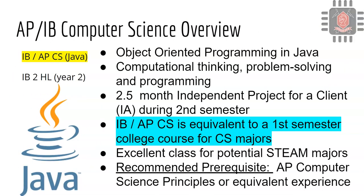We also have two higher-level computer science classes at Fairview, available for sophomores through seniors. I recommend taking AP Computer Science Principles or having equivalent experience before taking this class. You'll learn object-oriented programming — a methodology great for creating large software applications — along with computational thinking, problem solving, and programming. It also includes about a two-and-a-half-month independent project in the second semester. This is an excellent class for potential STEAM majors, and typically counts as a first-semester college course for computer science majors.